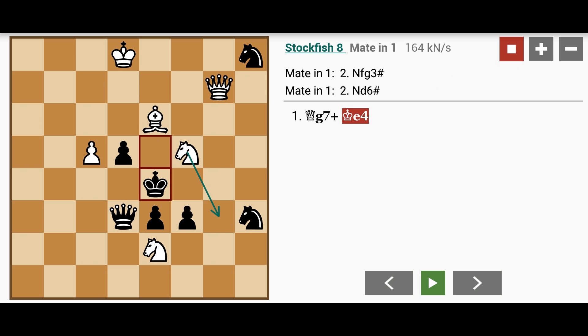then white wins immediately with knight to g3 checkmate, that is the knight on the f-file, or even knight to d6 mate.